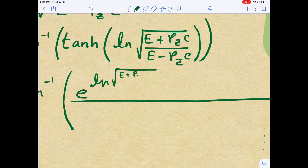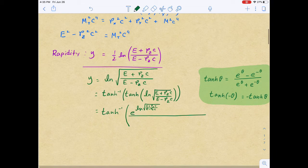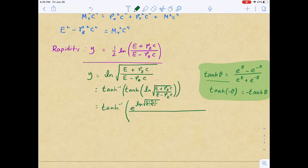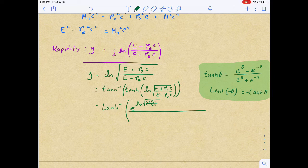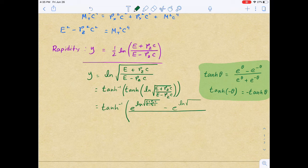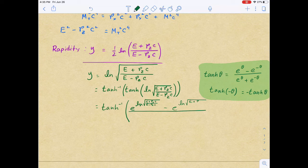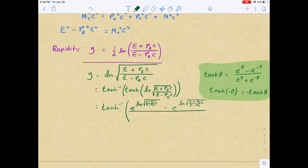E plus pzc divided by E minus pzc. And then, we're looking back at this identity. This gives us e to the natural log of square root of the same expression, E plus pzc divided by E minus pzc.